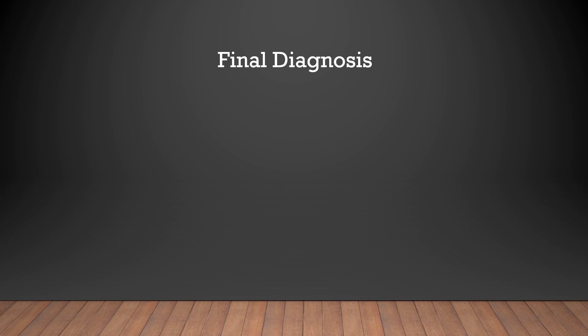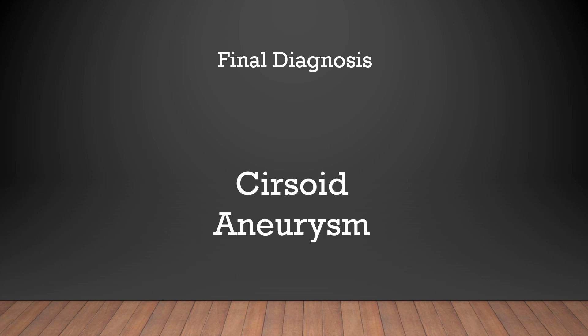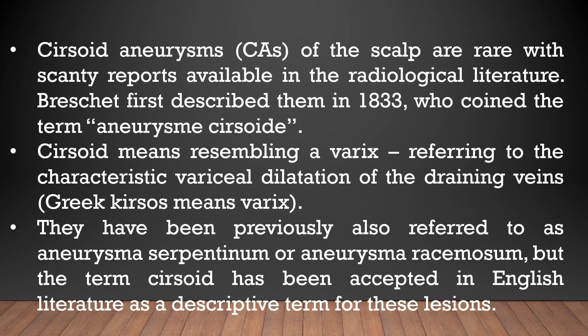The diagnosis of this condition is known as cirsoid aneurysm. Cirsoid aneurysms of the scalp are rare with scanty reports available in the radiological literature. Bréchet first described them in 1833, who coined the term 'aneurysme cirsoidé.' Cirsoid means resembling a varix, referring to the characteristic variceal dilatation of the draining veins. They have been previously also referred to as aneurysma serpentinum or aneurysma racemosum, but the term cirsoid has been accepted in English literature as a descriptive term.